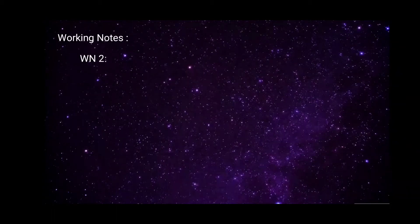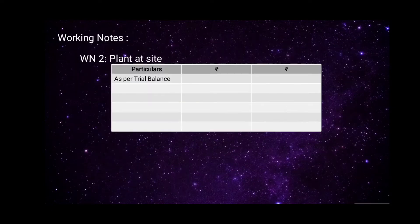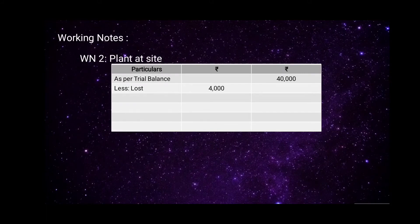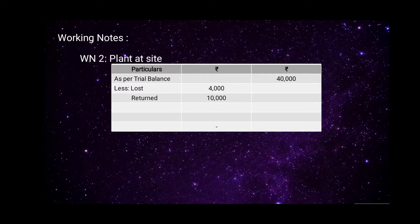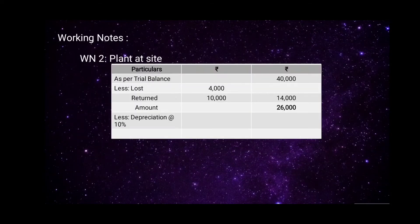Working Note 2 — Plant at Site: As per the trial balance, plant is rupees 40,000. Less: plant destroyed in accident rupees 4,000; less: plant returned to stores rupees 10,000 — total deductions rupees 14,000, leaving rupees 26,000. Depreciation at 10 percent on rupees 26,000 is rupees 2,600. Therefore, total plant at site is rupees 23,400.